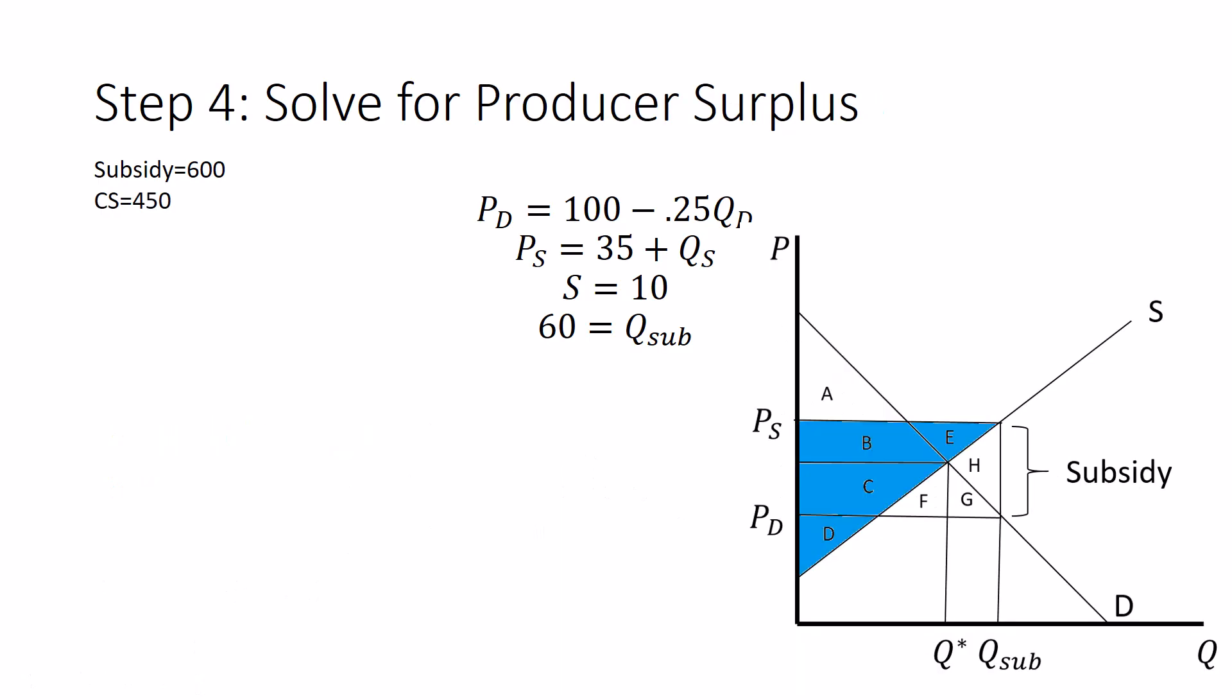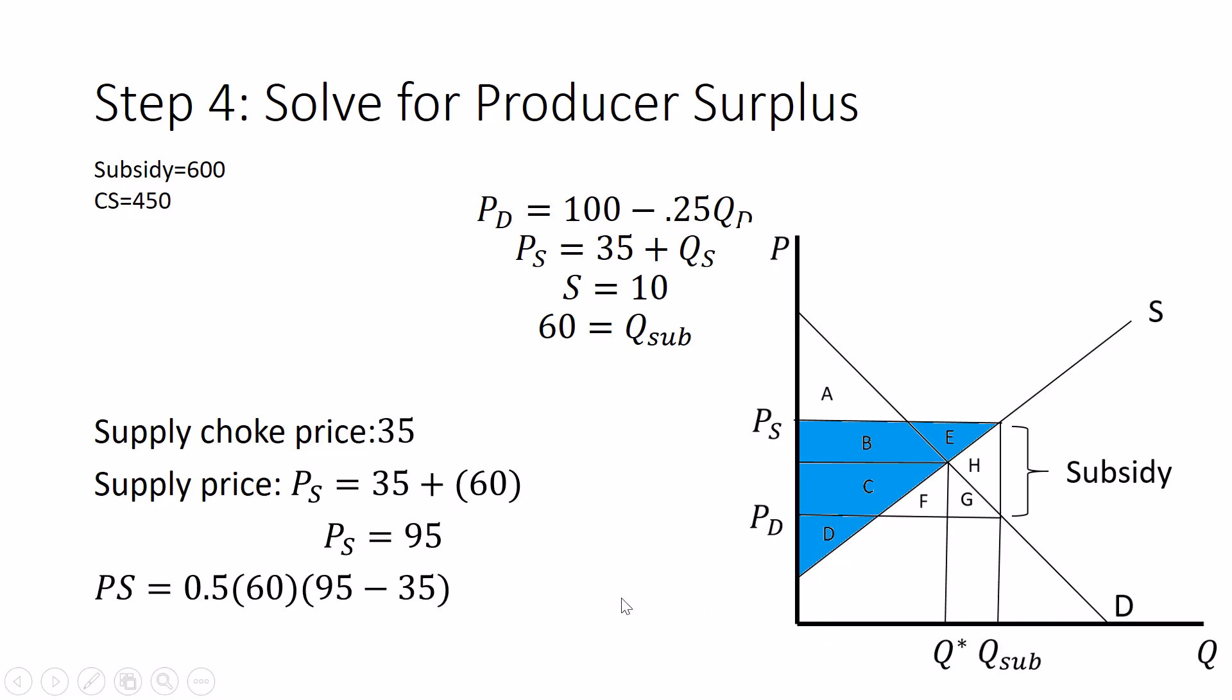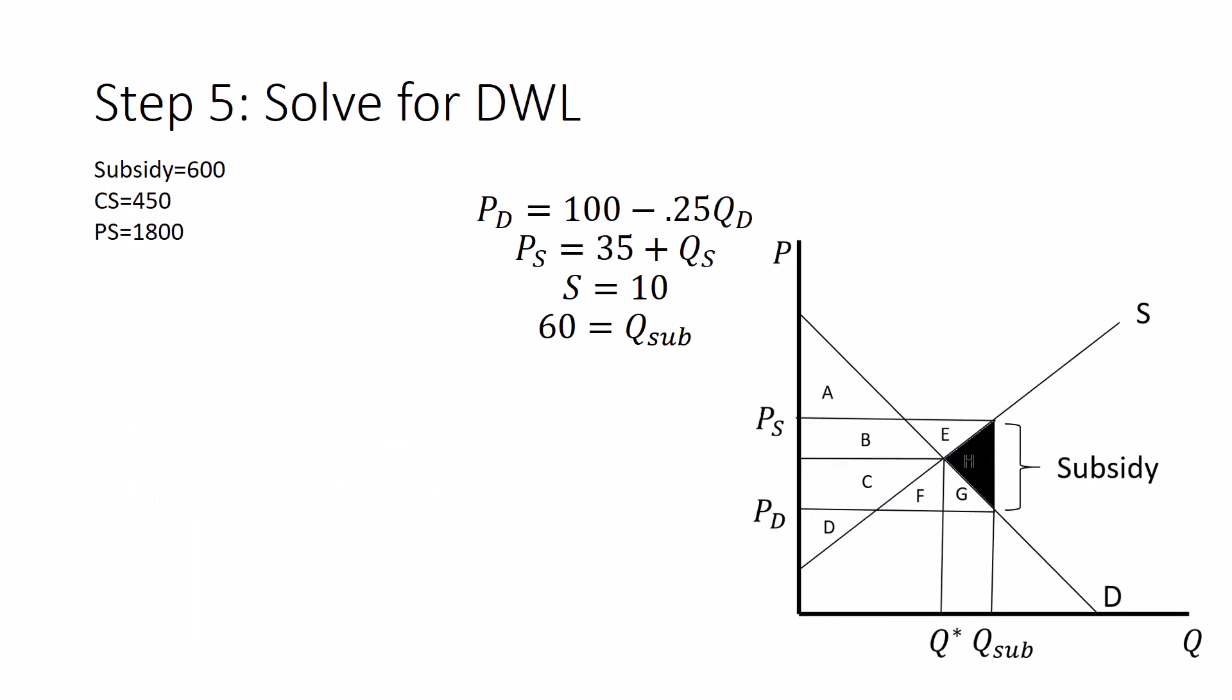But what about producer surplus? Everything below the supply price, above the supply curve. So we need to solve for PS, supply price. Since we have an inverse supply curve, we already know that this choke price is going to be the intercept of 35. So the choke price is 35. The supply price is 35 plus 60, which is 95. And so we can solve for producer surplus because we know it's half times the base, which is still 60, times the height. It goes from 95 all the way down to 35, which comes out to 1800. We are zipping along.